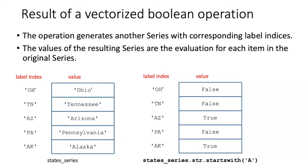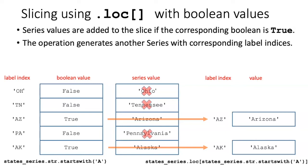Let's see how we can use these results to slice out the values of the series that start with the letter A. In the previous examples we passed into the square brackets of .loc either a list of indices or a range of indices. However, we can also pass in booleans for the corresponding values we want to include. If we pass in the series that resulted from this vectorized boolean operation, those values are used to determine which ones are part of the slice. Since the values were true for Arizona and Alaska, they are included in the output series. This generates another series with the same corresponding label indices as the original, but includes only the ones that correspond to boolean values of true.